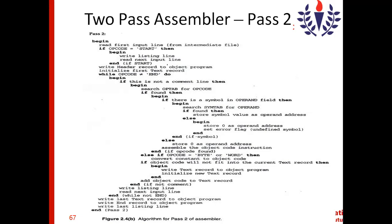After completing pass two, the assembler generates the object program. So what is the structure of the object program and how will it be created? That is exactly what we are going to discuss with this algorithm. Before moving on to the algorithm, let us view the structure or the format of the object program.